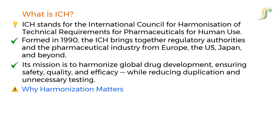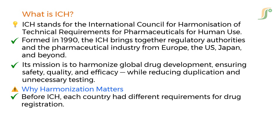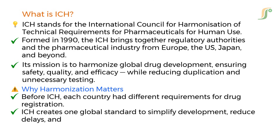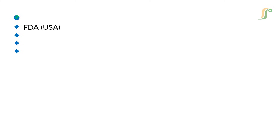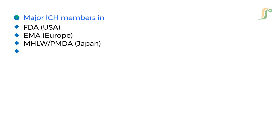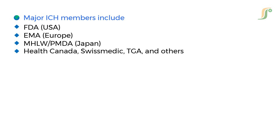Why harmonization matters: before ICH, each country had different requirements for drug registration. ICH creates one global standard to simplify development, reduce delays, and ensure consistent safety standards worldwide. Major ICH members are FDA (USA), EMA (Europe), MHLW/PMDA (Japan), Health Canada, Swissmedic, TGA, and others.